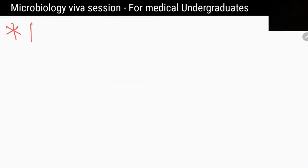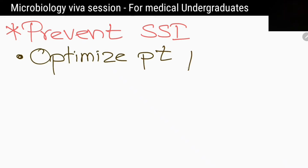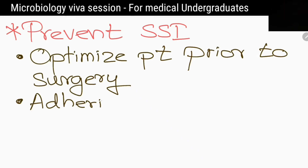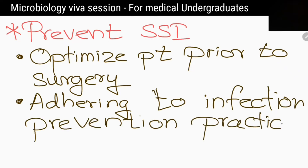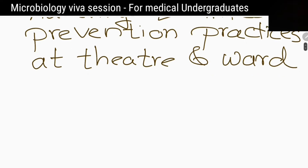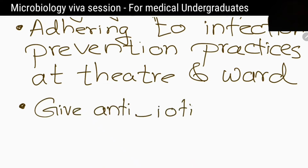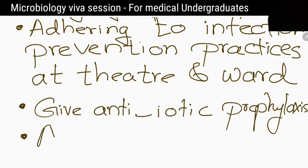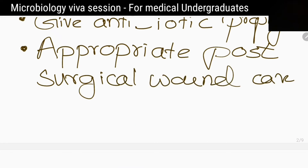How to prevent Surgical Site Infections? Optimize patients before surgery. Adhere to infection prevention practices at theatre and ward. Give antibiotic prophylaxis. Appropriate post-operational wound care. Shorten hospital admission duration.